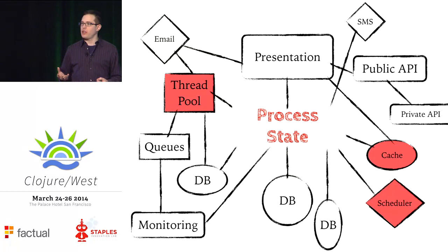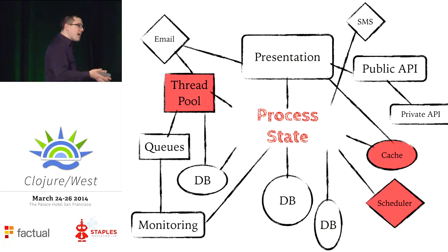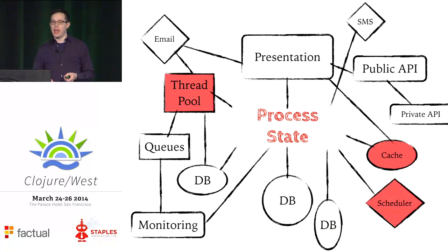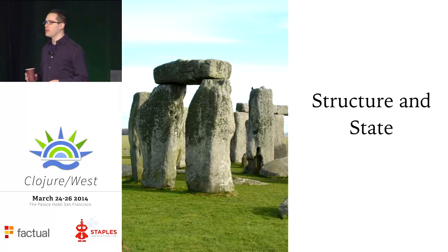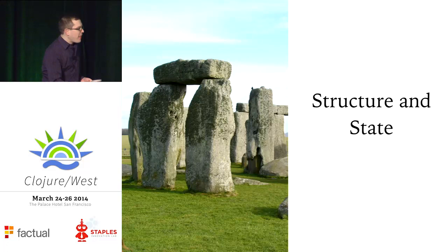Finally, we can have things that are inherently stateful in our applications. We can create threads. We can use mutable reference types like refs, atoms, and agents. We can use core.async channels. We have things in our program that are inherently stateful. And somewhere we have to keep track of that state. So the question that confronts us every time we start a Clojure project is: where do we put it? Where does the state go?